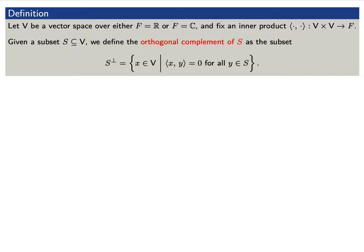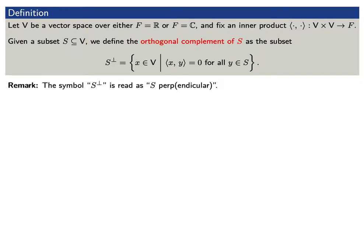We'll use all of this to make a definition. Say that v is a vector space, either over the real numbers or the complex numbers, and let's fix an inner product. Given a subset S of v, we define the orthogonal complement as the set of vectors in v such that the inner product of x and y is zero for all y in the subset S. We denote this set with the symbol S_perp, read as S perpendicular.